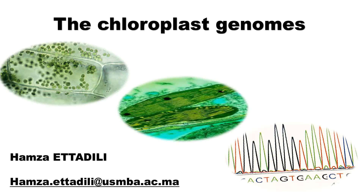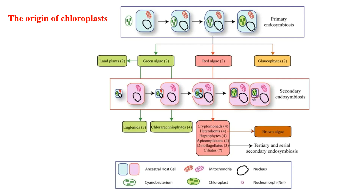Hi everybody, I am Hamza Teddili and now I will give you a short presentation about the chloroplast genomes. Firstly, we will start by the origin of chloroplasts. The origin of chloroplasts dates back to more than a billion years. Scientists suggest that plastids arose from an endosymbiotic photosynthetic bacteria. They note that plastids divide by binary fission independently of the surrounding cell.